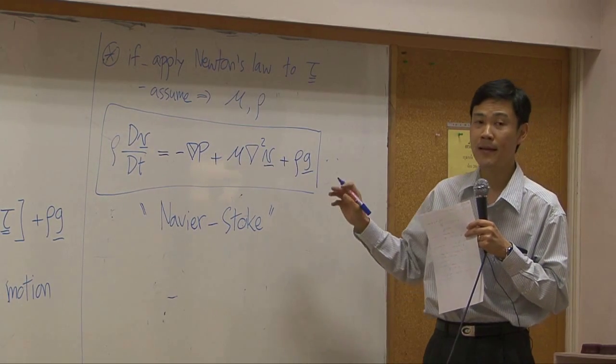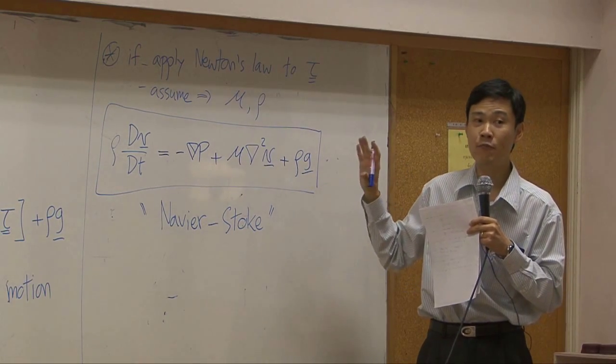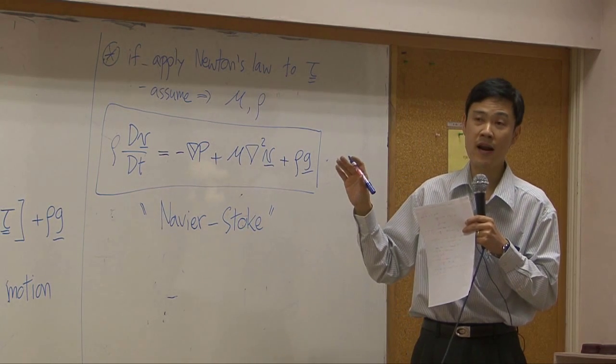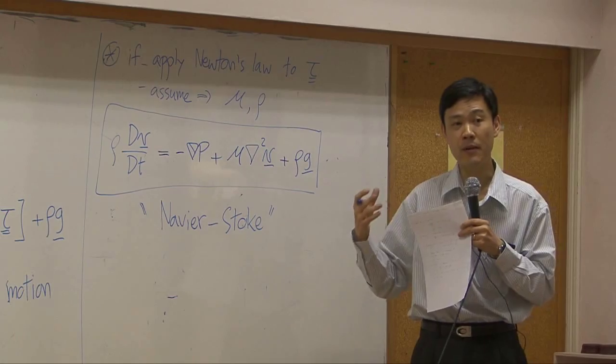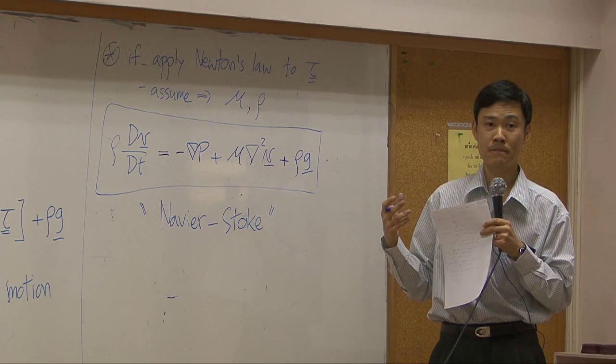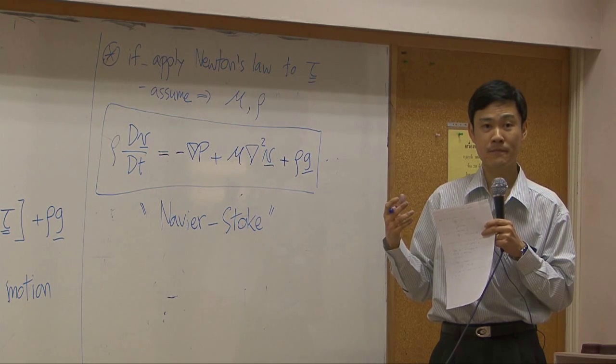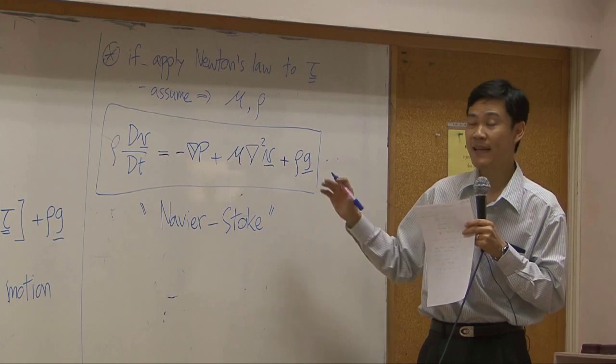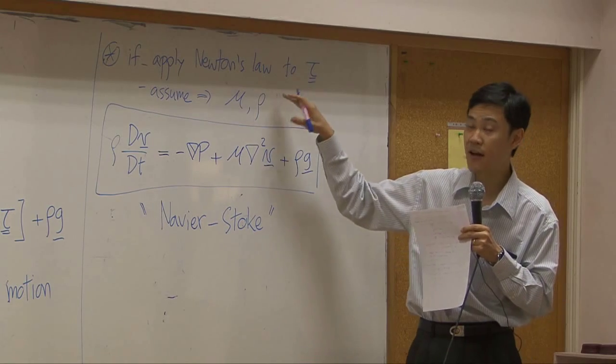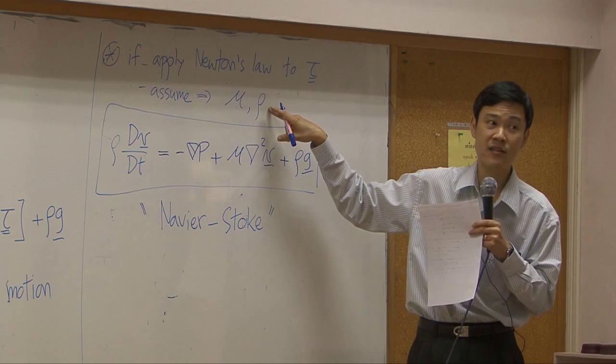All right, now let me ask you this. Can we apply Navier-Stokes equation to the system where we have gas flowing in a pipe? Can we? Why? Yes, we cannot use Navier-Stokes equation for gas because gas is compressible, so density of gas is not constant.